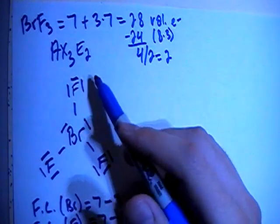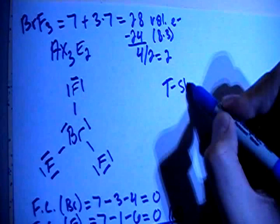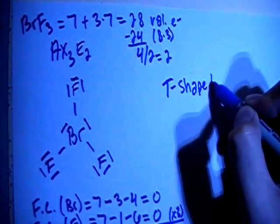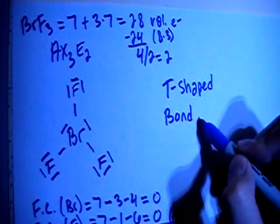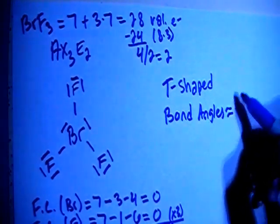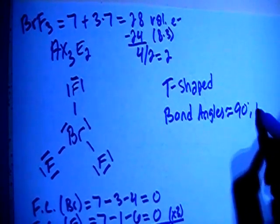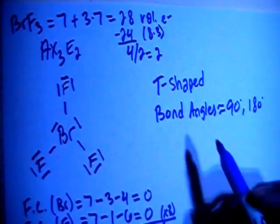The AX3E2 type of compound is going to be, it's called T-shaped. Alright, and with a T-shaped compound, the bond angle, or angles, are approximately 90 degrees and 180 degrees. You have 2 different sets of angles on this shape.